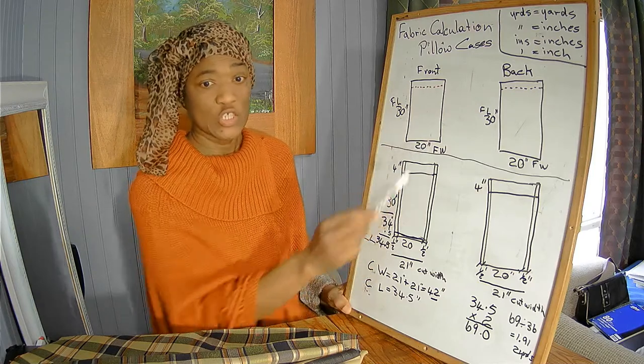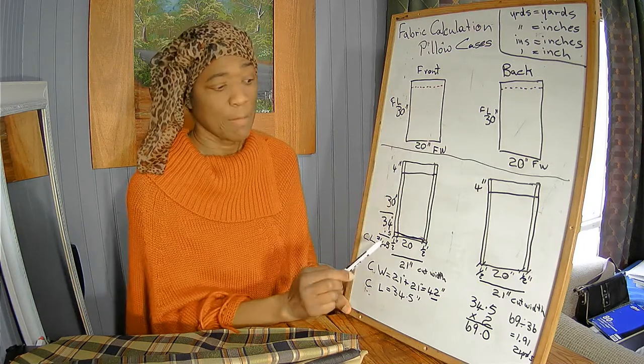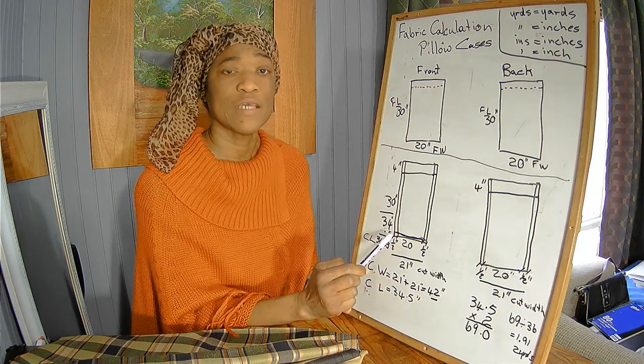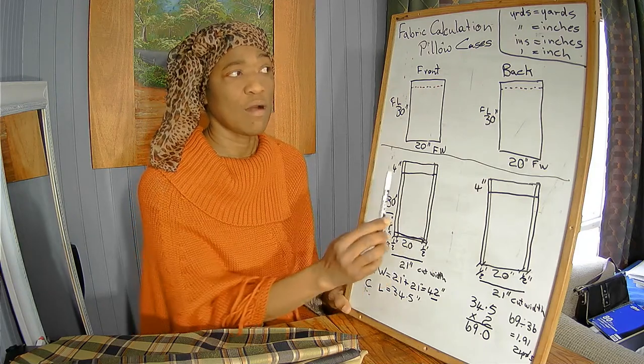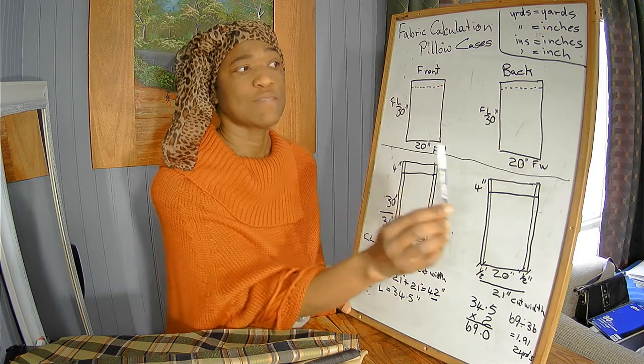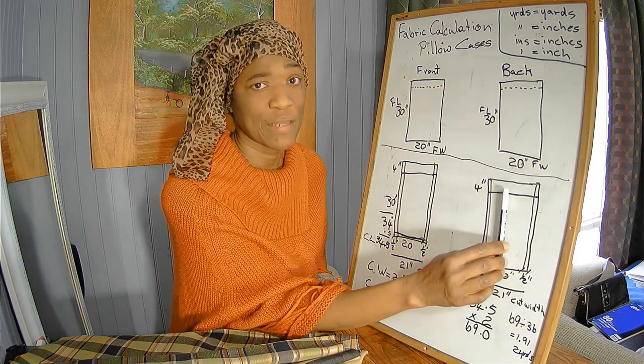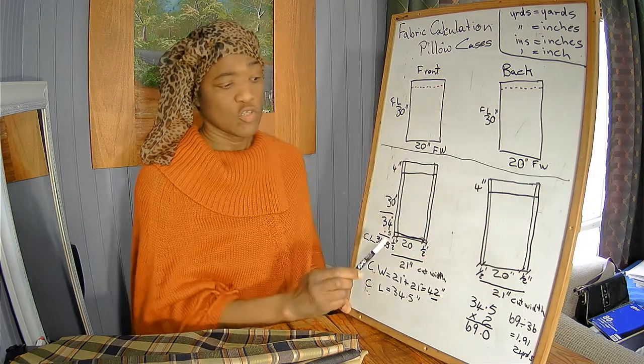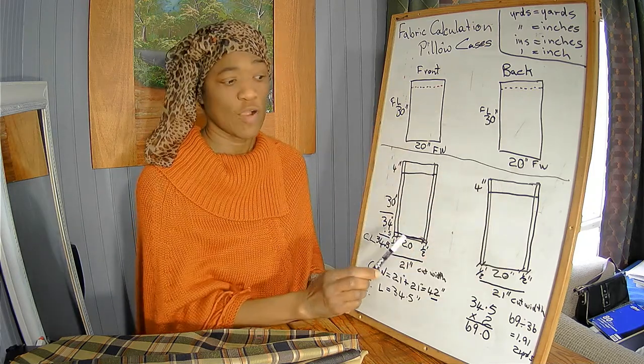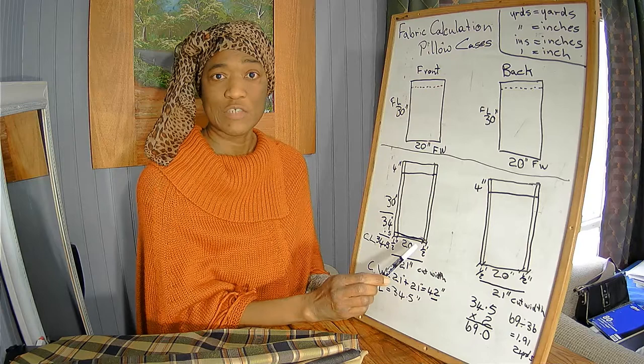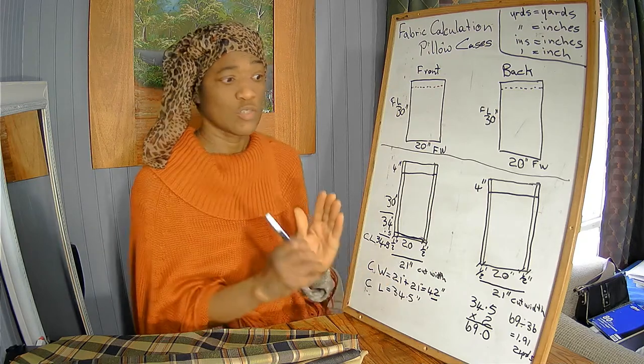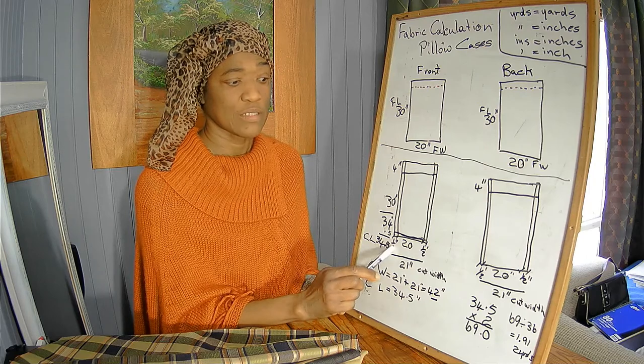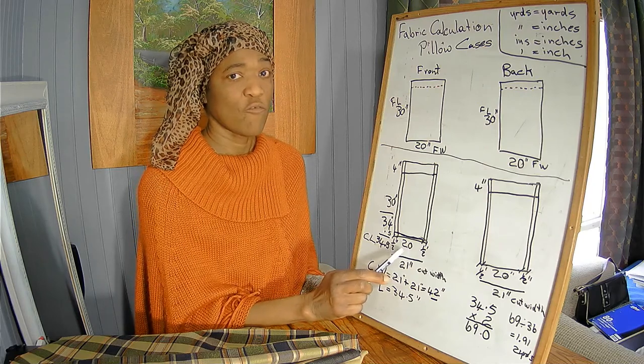Our cut width will be 20 inches, which is our finish width plus our seam allowances on both sides. Now we have seam allowances on the front panel, we have seam allowances on the back panel. Whatever we do to the front panel, we do to the back panel. So we have half an inch for one side, half an inch for the other side, which is one inch for your seam allowances.